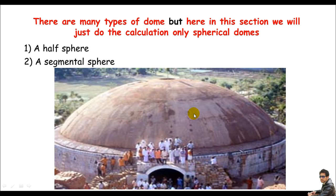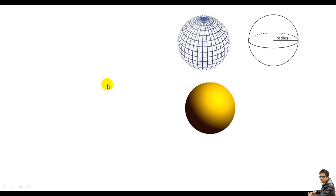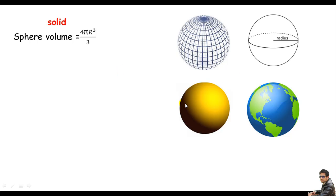The calculation for a half sphere is quite simple and straightforward, and for a segmental sphere it is a little more complicated and challenging. Before starting the calculation, let me show you the volume and surface area of a sphere, because these formulas will help us in material estimation. The sphere volume is just 4/3 times pi r cubed — this is for a solid sphere. Remember, the dome is always a hollow sphere.